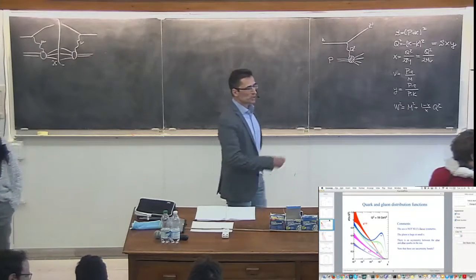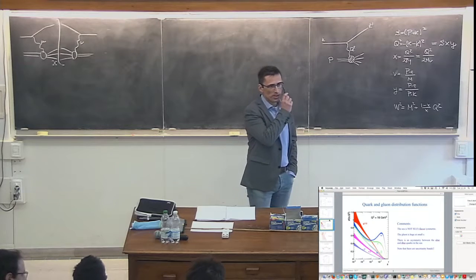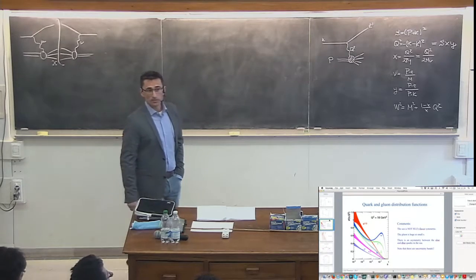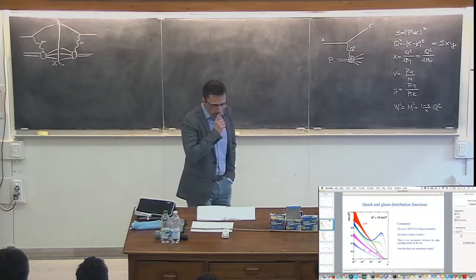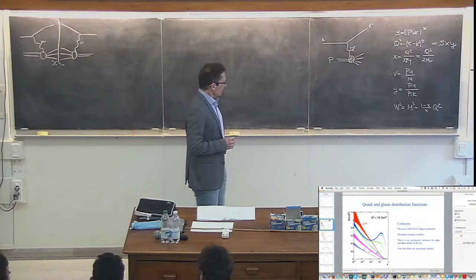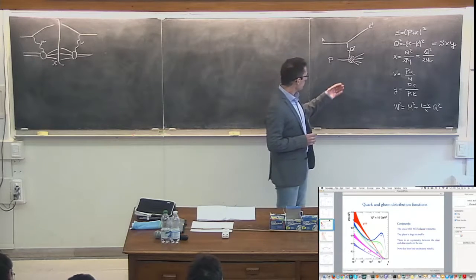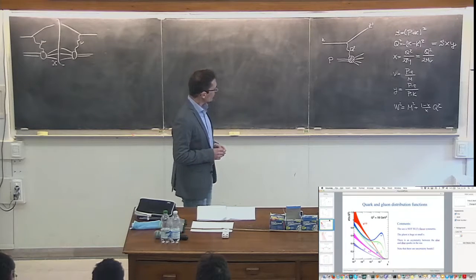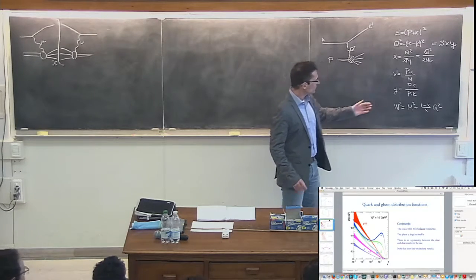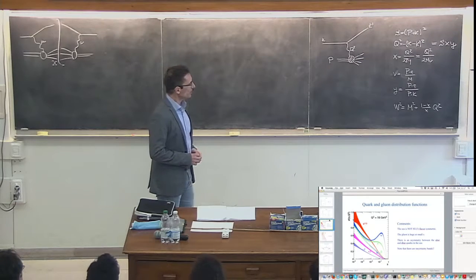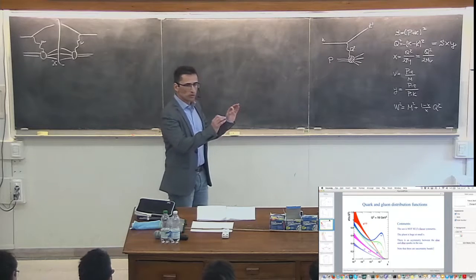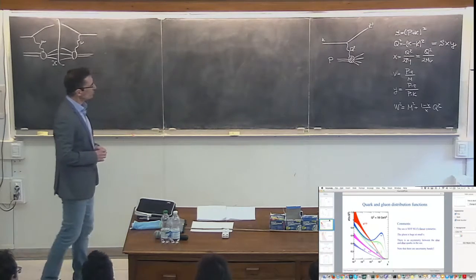Okay, so maybe we can start — those who have not signed yet can sign afterwards — so we can start the lecture. Very good, so we start from where we left yesterday. Yesterday we analyzed our hydrogen atom equivalent in QCD, which is the DIS, the simplest of all processes, which is teaching us what is the internal structure of the proton. I've rewritten the same blackboard from yesterday, where relevant variables are written in terms of invariant quantities — quantities which don't depend on the reference frame when we compute this amplitude.